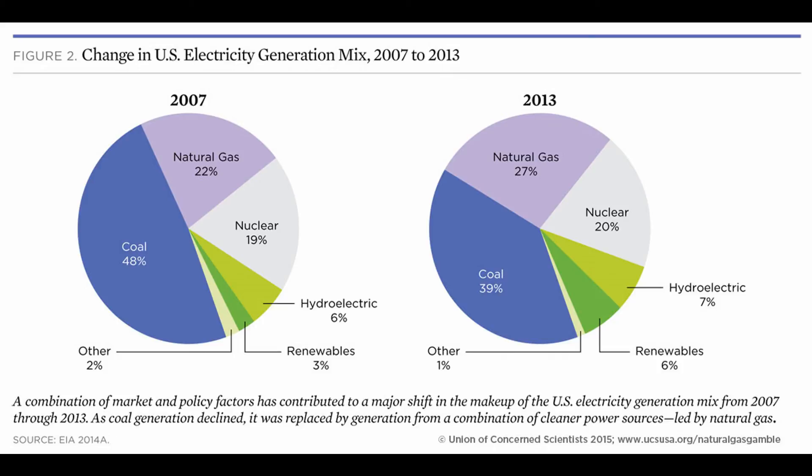Our energy makeup has changed — this graph shows we're using a lot more natural gas and less coal compared to 2007. By 2013 we were at 27% natural gas, and by October 2016 that had risen to 33%.